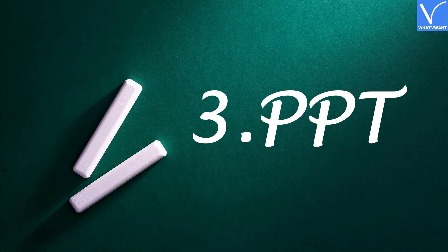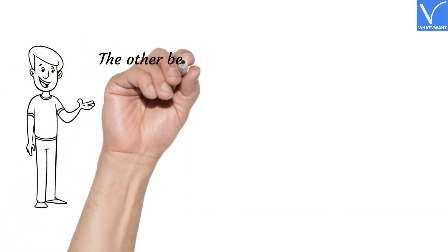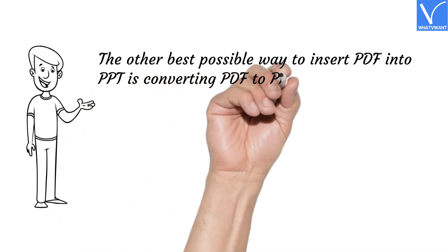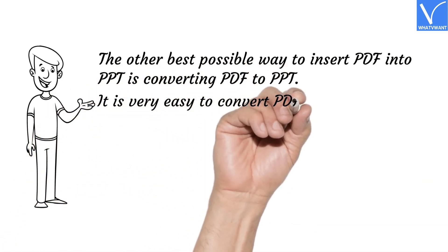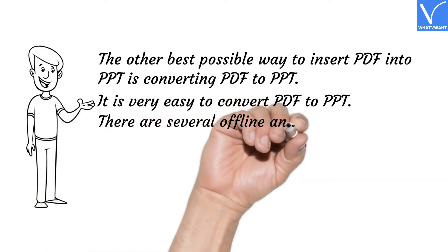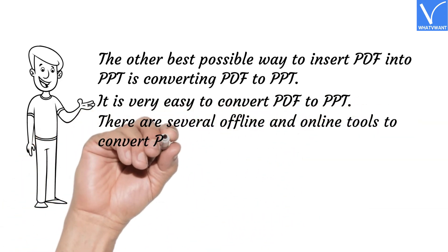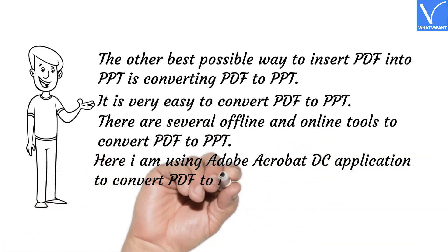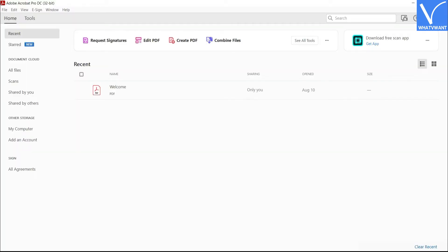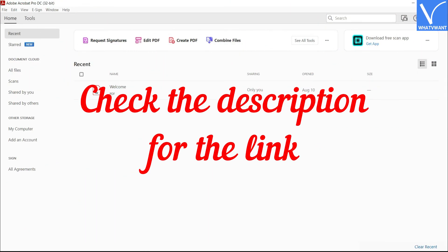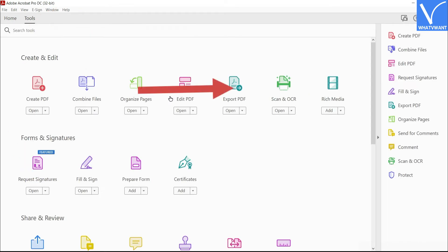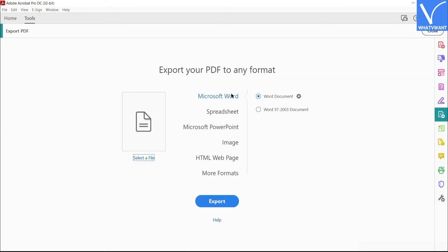Number 3: PPT. Another great way to insert PDF into PowerPoint is by converting PDF to PPT. It is very easy to convert PDF to PPT, and there are several offline and online tools available. Here I am using Adobe Acrobat DC. Download and install it from its official site — check the description for the link. Open Adobe Acrobat DC, click on Tools, and select the Export PDF option. You will be redirected to a new interface.